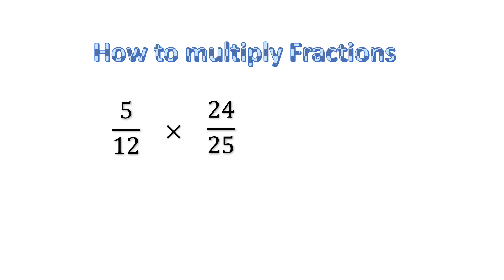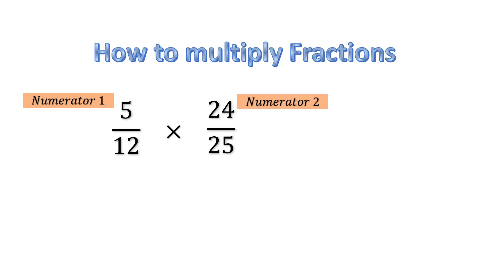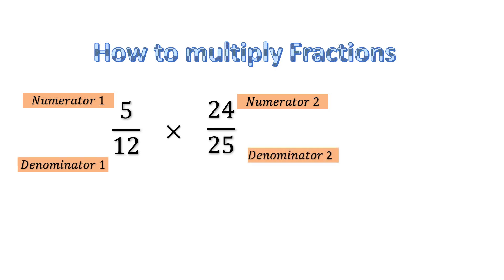In these two fractions there are four parts. Numerator 1 — let us take 5 as the first numerator. 24 is our second numerator, that is numerator 2. Denominator 1 is 12 and denominator 2 is 25. So the four parts: two numerators and two denominators.